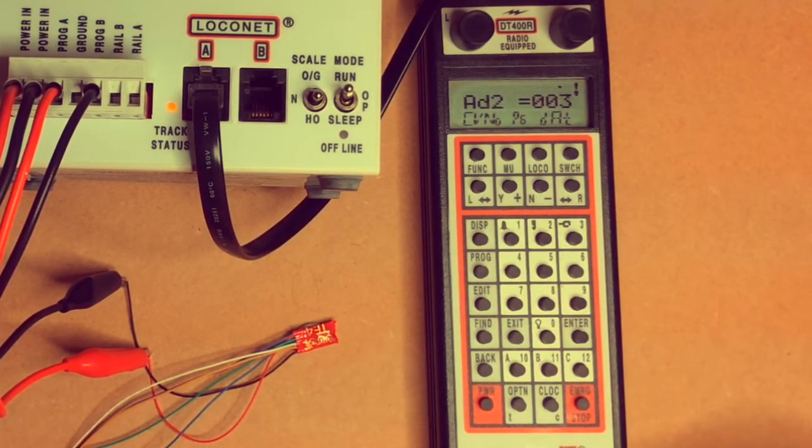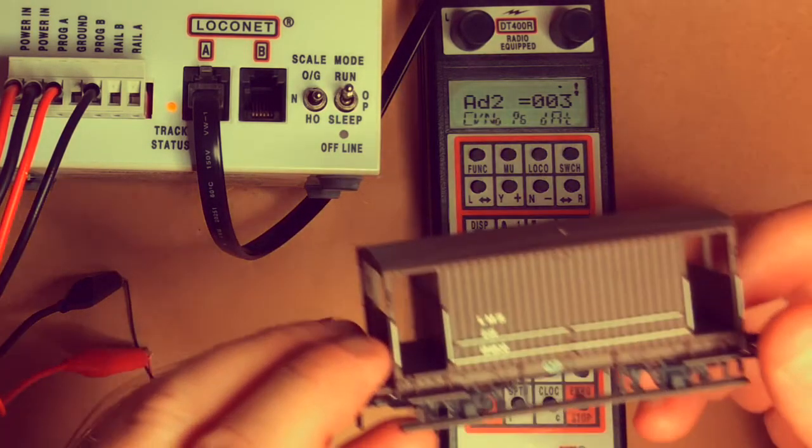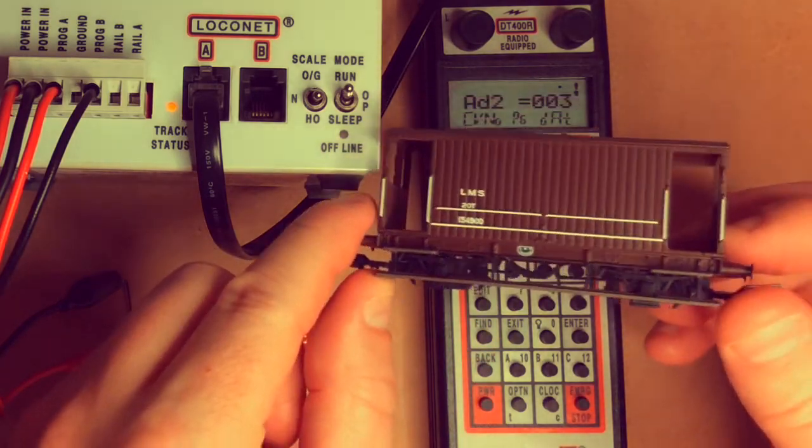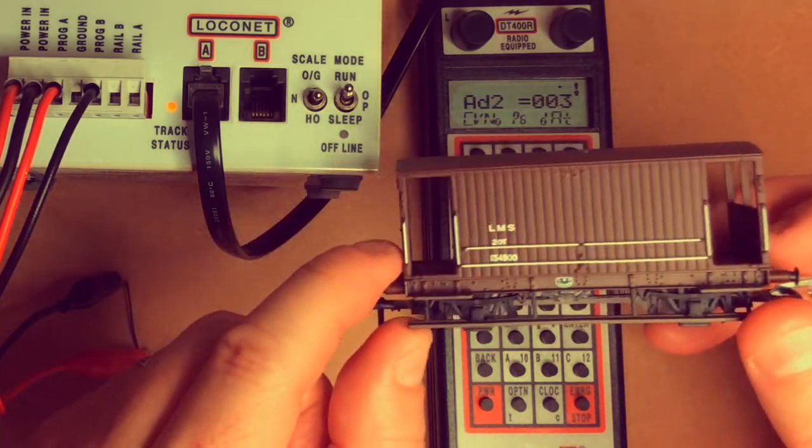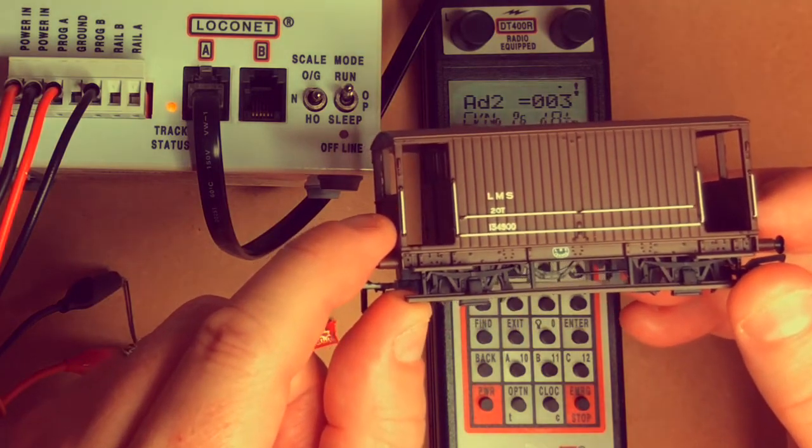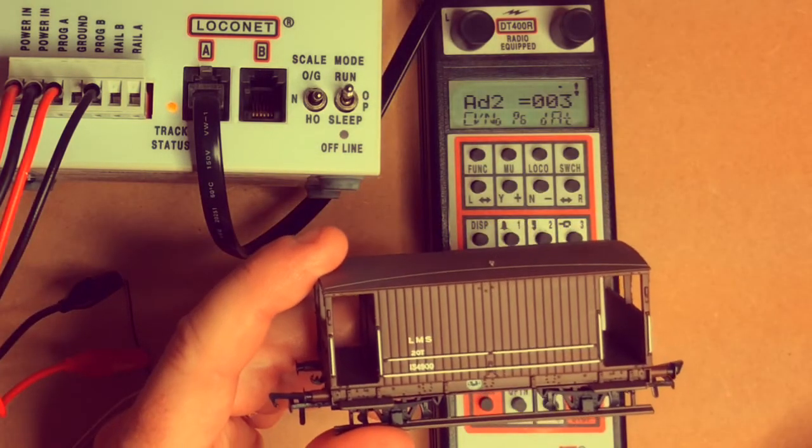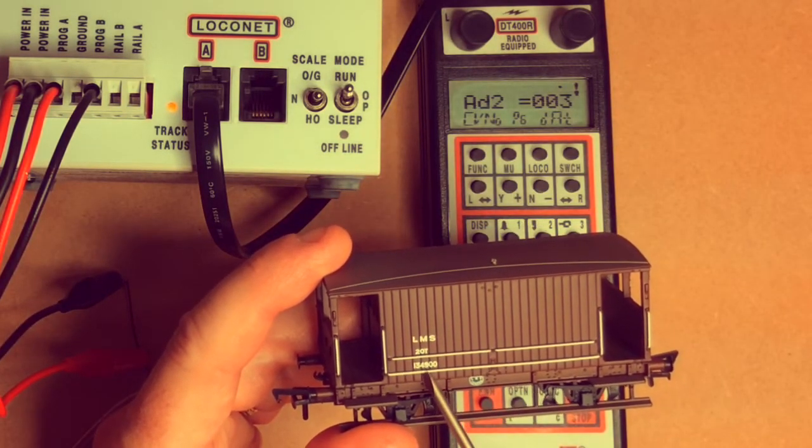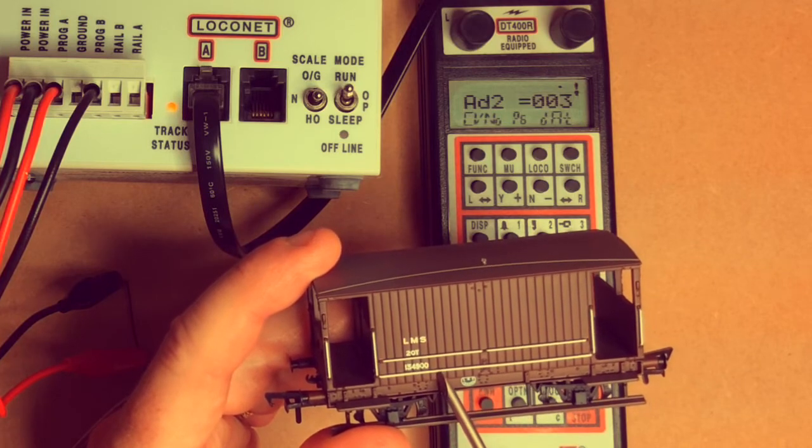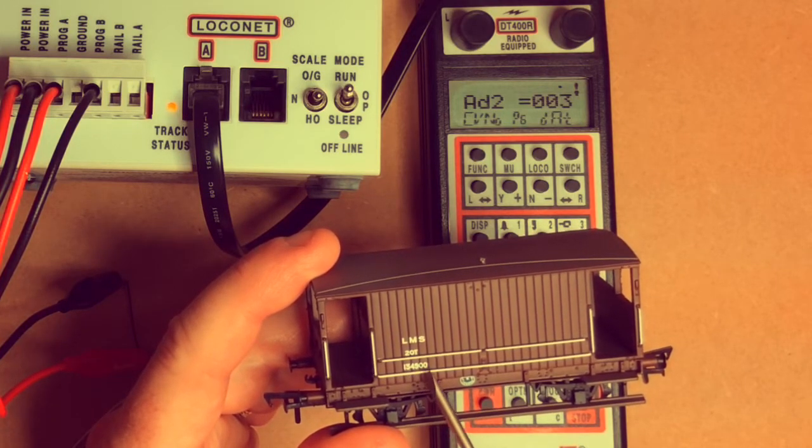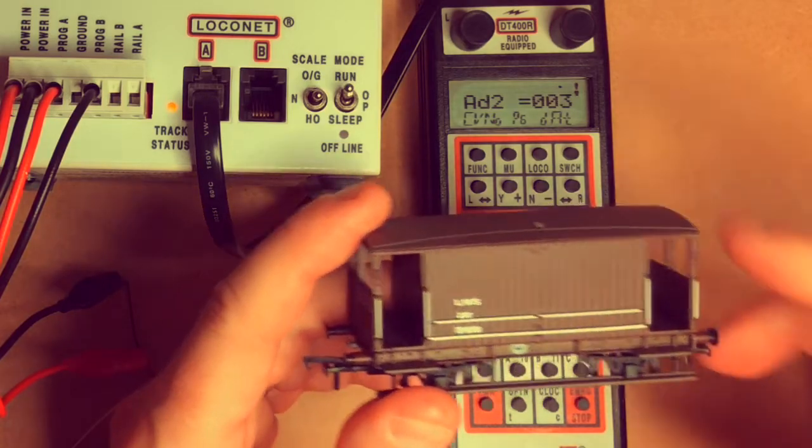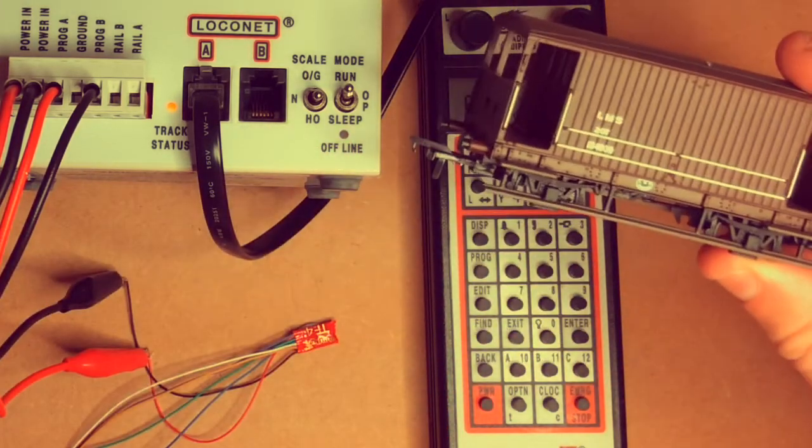What do we want to do? We want to program it tonight with an address that we need for our layout. As you've seen on some of my other videos, I'm installing transponding decoders into brake vans or cabooses. This is a London Midland in Scotland because I model the UK, but it doesn't matter—you can find whatever you want. The number on this one is 134900, so what I'm going to use is the last four digits, 4900, and we're going to make that the decoder address for this wagon.